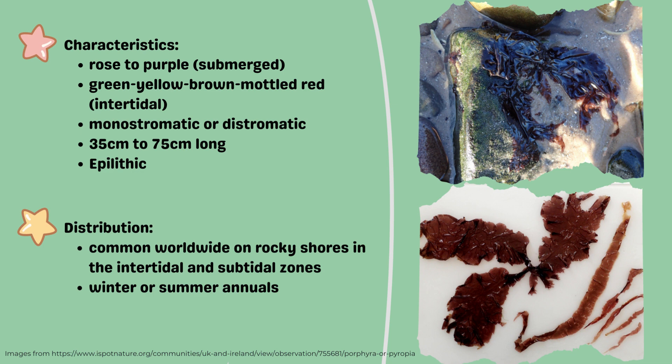Lastly, the blades or the macrothalus of Porphyra is the gametophyte generation, and its microthalus — the small branched filamentous conchocelis phase — is the sporophyte generation, which will be further discussed later in the life history portion.